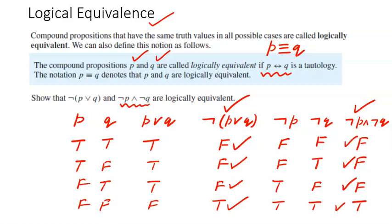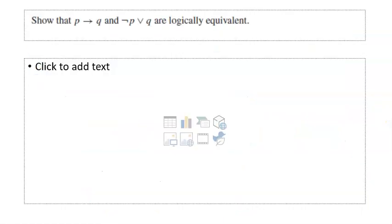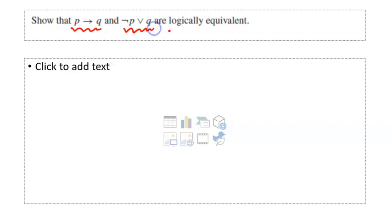Proving that two statements are logically equivalent — the most fundamental approach is to write their truth tables and verify that the values match in all rows. Let us see one more problem: we have to show that P implies Q and negation of P or Q are logically equivalent.